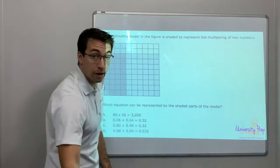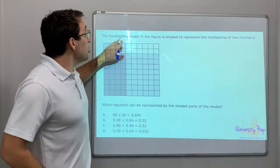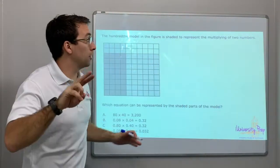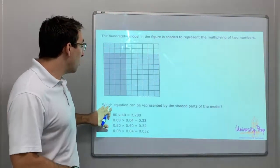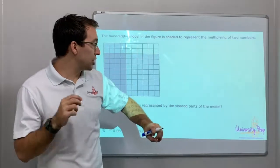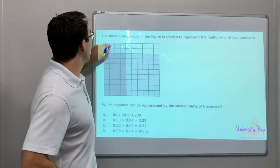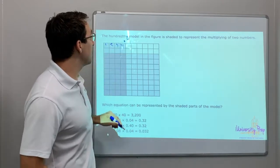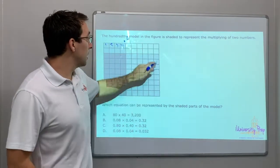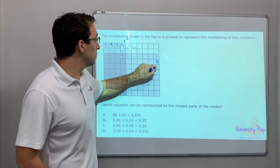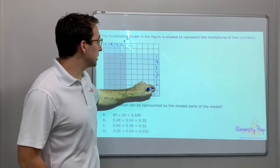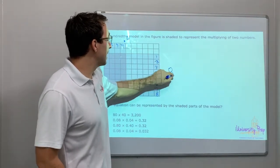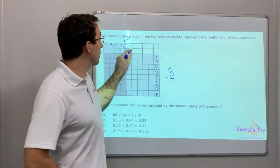Another question with the pictorial area model. This hundreds grid — the shaded figure represents multiplying two numbers. Which equation could be represented by the shaded parts of the model? This is one, two, three, four — so four out of ten, four-tenths. And this is one, two, three, four, five, six, seven, eight — eight-tenths, because this is the tenths place.